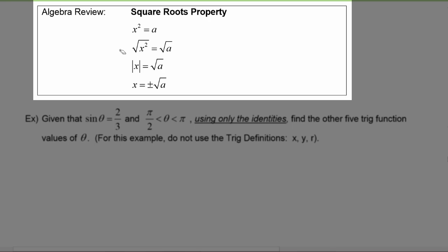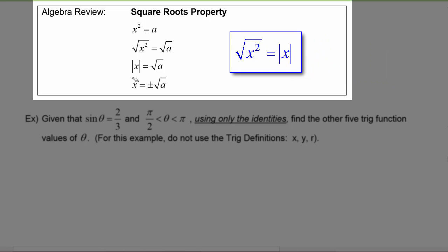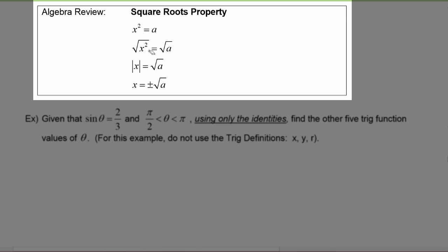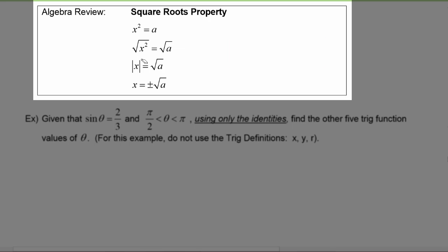...and you take the square root of both sides, the square root of x squared is the absolute value of x. Notice there's no plus or minus here — the square root of a is just radical a. The plus or minus comes in because of the absolute value, where a is a constant.